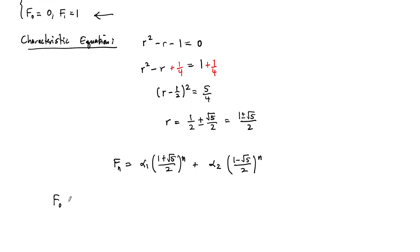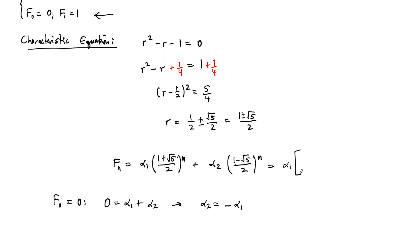F_0 = 0 gives us a nice result. Plugging in n = 0, any base to the 0th power is 1, so we get 0 = α_1 + α_2, meaning α_2 = −α_1. We can reduce the formula to a single parameter: F_n = α_1 · [((1 + √5)/2)^n − ((1 − √5)/2)^n].